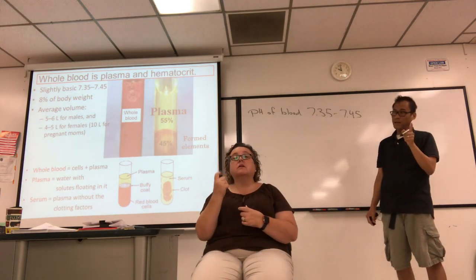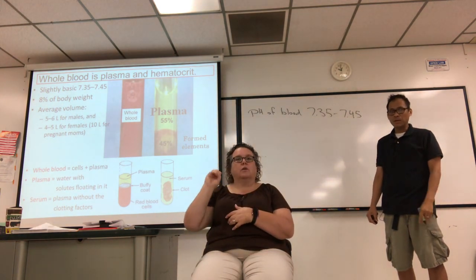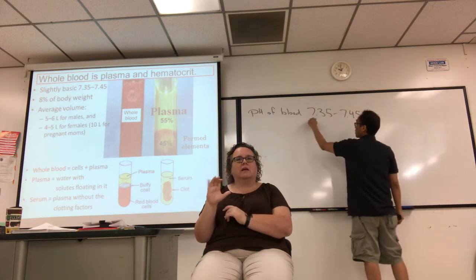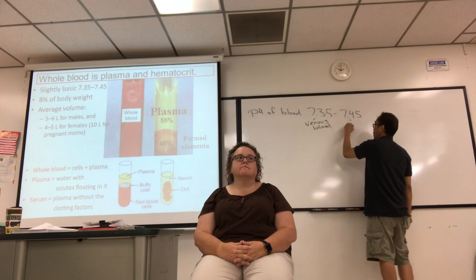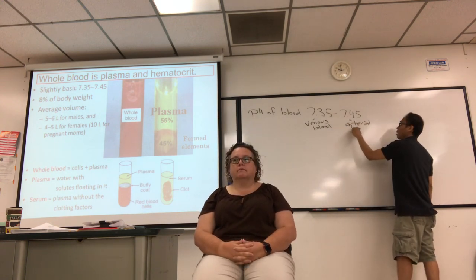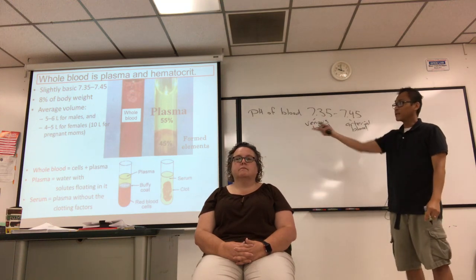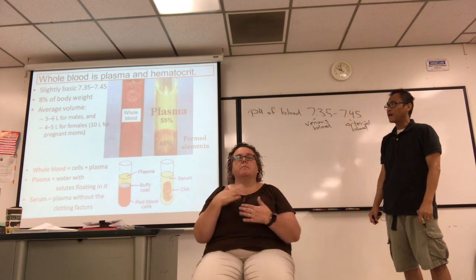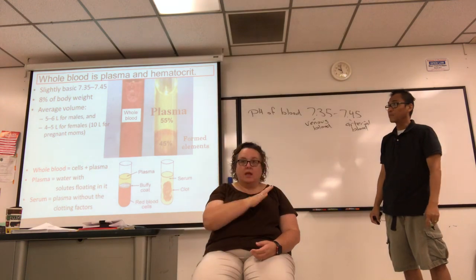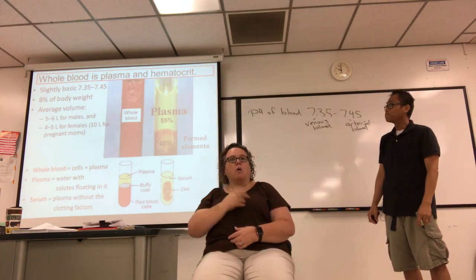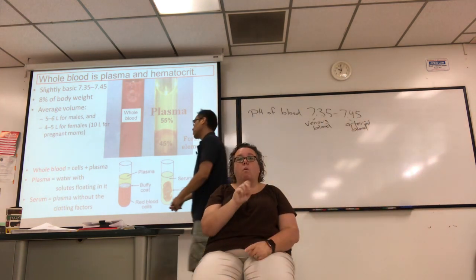Venous blood is more acidic than arterial blood. Blood volume is about 8% of your body weight — about 5 to 6 liters for a man, 4 to 5 liters for a female. In pregnant moms, the blood volume can almost double.